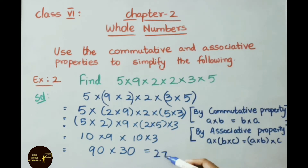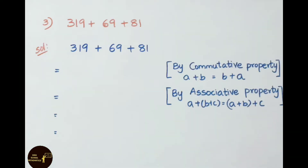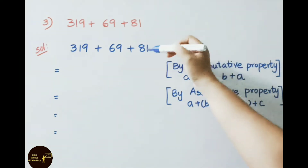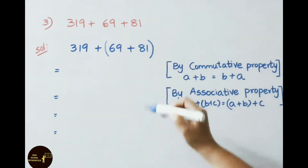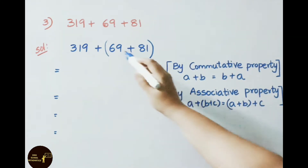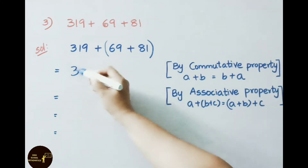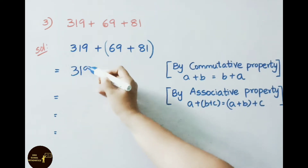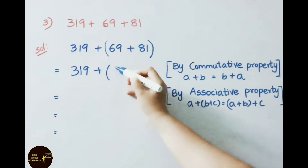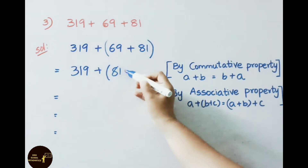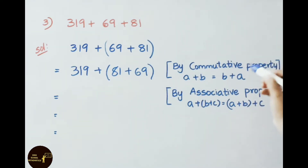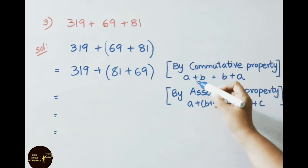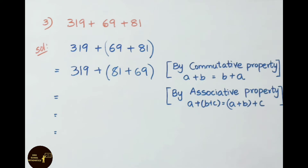Now we shall apply the commutative property for these two numbers. A plus B can be written as B plus A. Write down 319 plus 81 plus 69. Commutative property applied: A plus B equals B plus A.